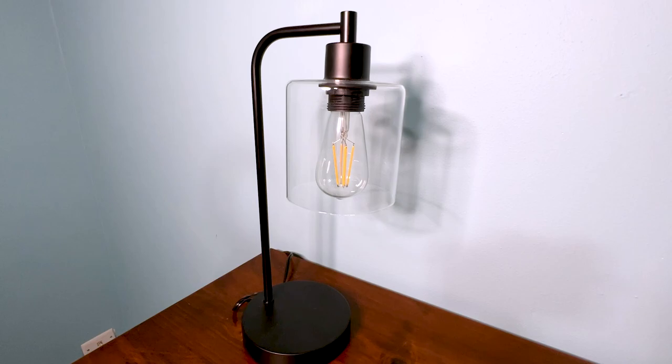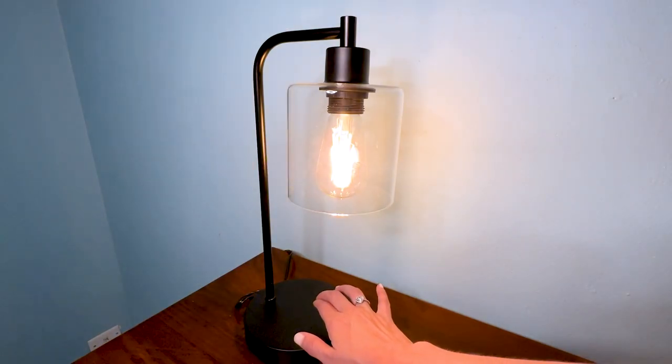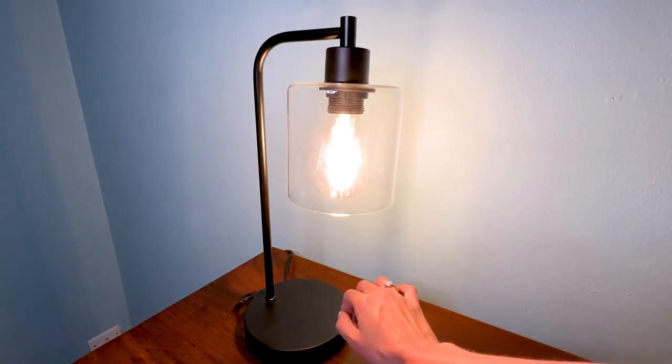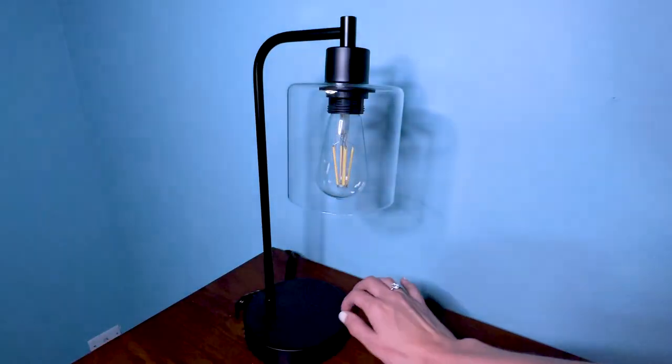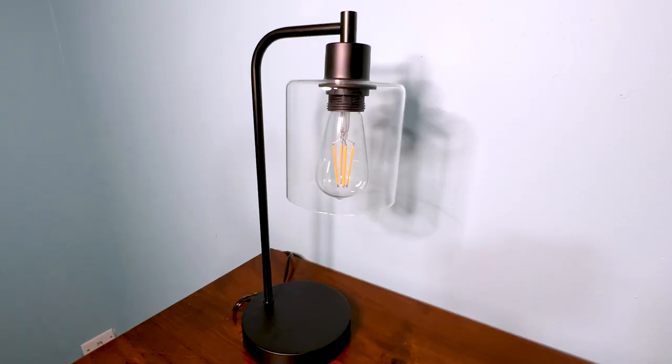Now here's my one con with this lamp. The dimming feature goes from low light to high light. So if you're reading at night and then you're ready to go to bed, you have to go from a low reading light all the way up to the high brightest light function, and that can be quite jarring late at night.